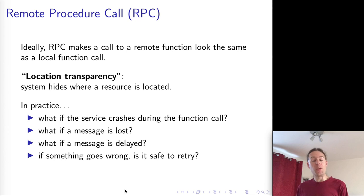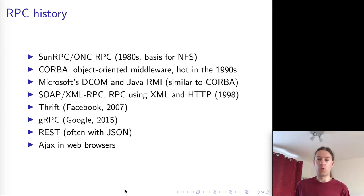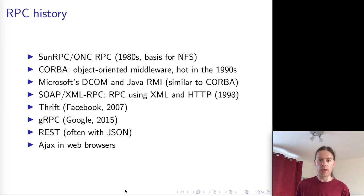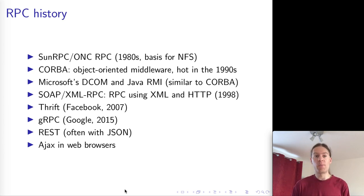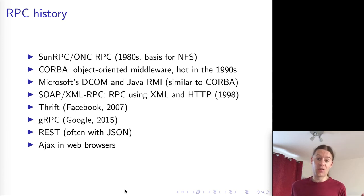That hasn't stopped people from trying to build RPC frameworks over a long time that try to look like you're calling a local function even though you're calling something on another node. It started back in the 80s when the term RPC was first coined — Sun Microsystems used this to build NFS, the network file system. Then in the 1990s it was a very hot topic: people talked about object-oriented middleware and there was CORBA, which was really hot but nobody uses anymore. There was also Java's remote method invocation, which is similar to CORBA.